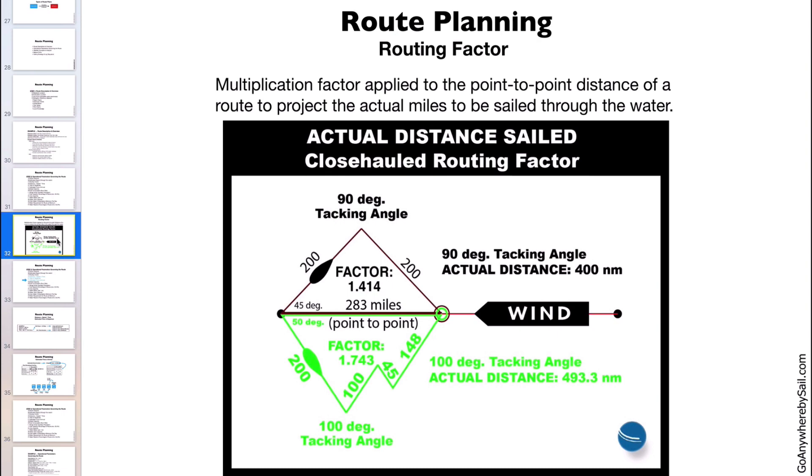Okay, let's get in here a little bit deeper. I have the wind drawn here on a horizontal axis and we are sailing point-to-point a distance of 283 nautical miles.